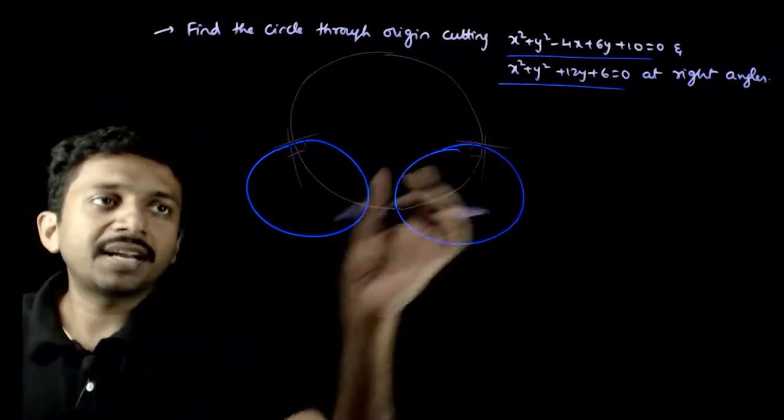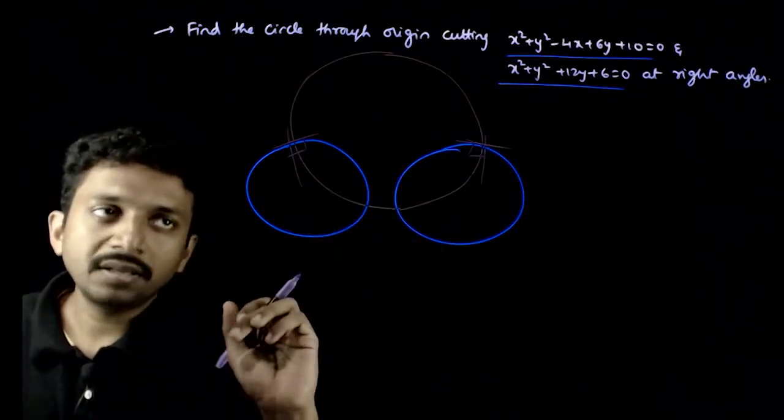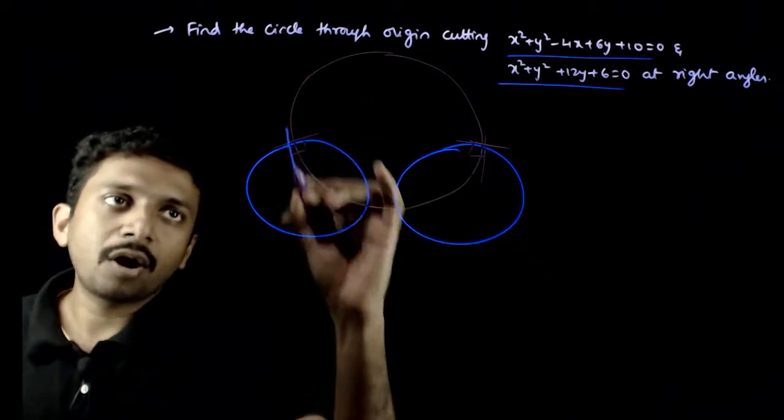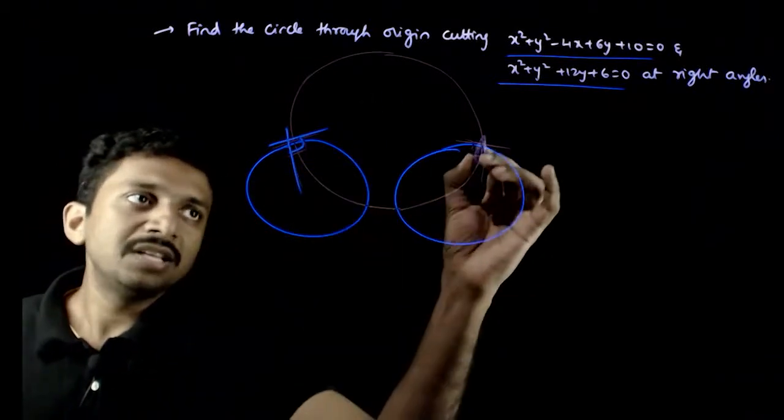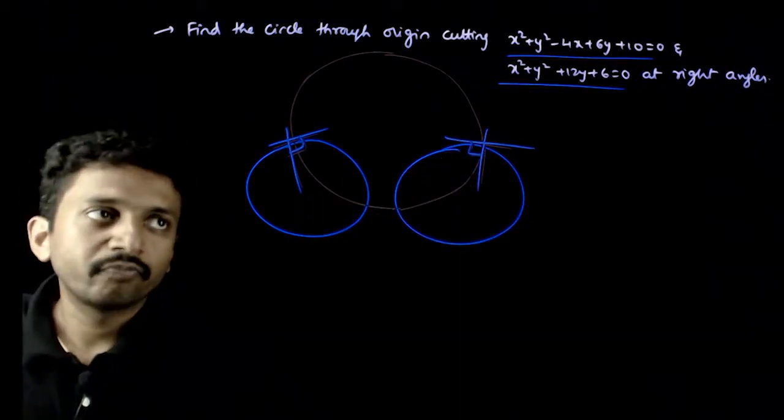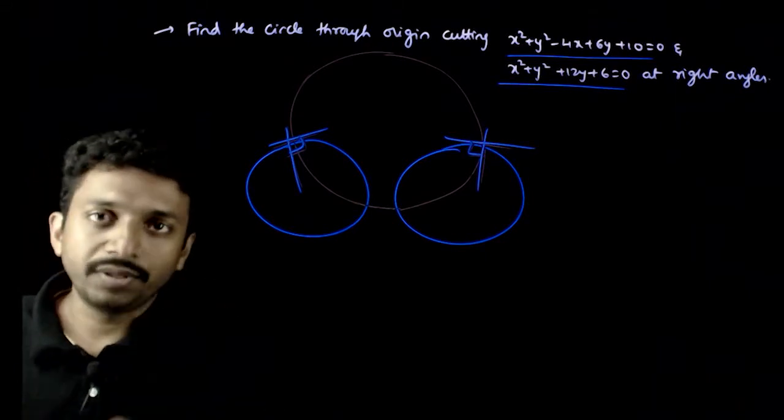So, first circle is given, the second circle is given, you have given two circles. I want to find a circle which cuts these two circles orthogonally. Orthogonally means where it's cutting, the tangents between them should be 90 degrees. So, now how do I do this?